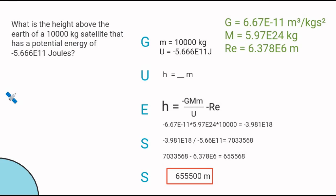Let's look at what we know. We have the mass of the satellite, the potential energy of the satellite, these values about the Earth, and we know we're looking for the height in meters, or the altitude above the Earth—this distance.